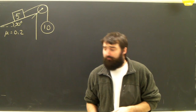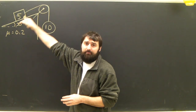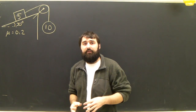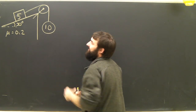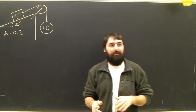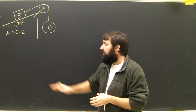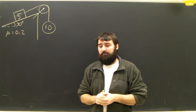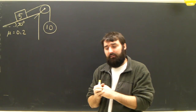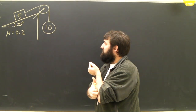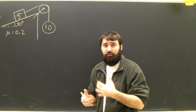Now we're going to take it a step further. We still have a 10 kilogram object attached via a pulley to a 5 kilogram object, but now the 5 kilogram object is on an inclined ramp. The ramp makes an angle of 30 degrees with the horizontal. The coefficient of friction is still going to be 0.2, and the question hasn't changed: what's the acceleration of the system, and what is the tension in the rope connecting the two masses?